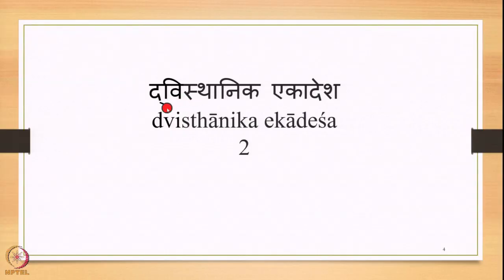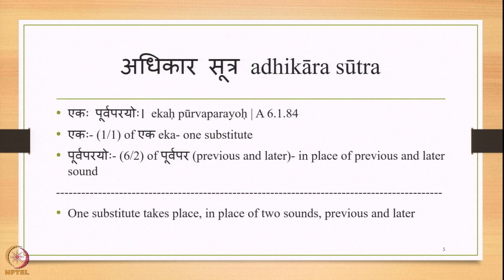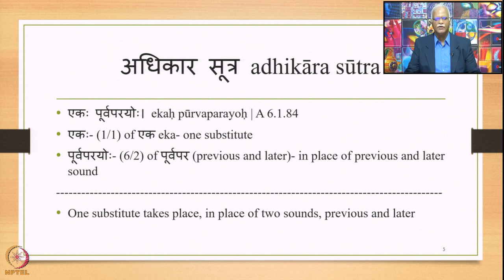Coming back to Dvishthanika Ekadesha: this is different because here there are two substituents, and one substitute replaces both of them. This is stated by the Adhikara Sutra Ekapurvaparayoh 6.1.84 — a very important Adhikara Sutra. Ekaha means one substitute, and Purvaparayoh (6/2) means in place of the previous (Purva) and the latter (Para) sound. So one substitute takes place in place of two sounds.